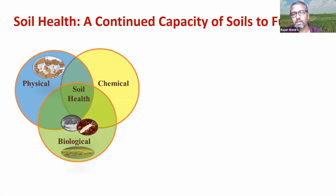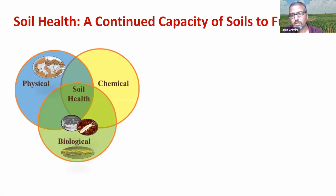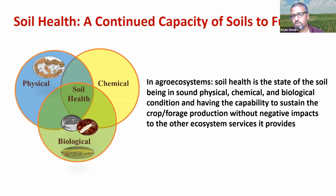This is a very familiar figure. Soil has its own physical properties, structure, chemical composition, and biology. When these three components are in sound physical, chemical, and biological condition, they can support crop production and also provide ecosystem services.